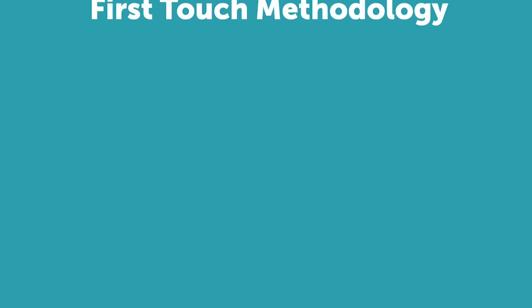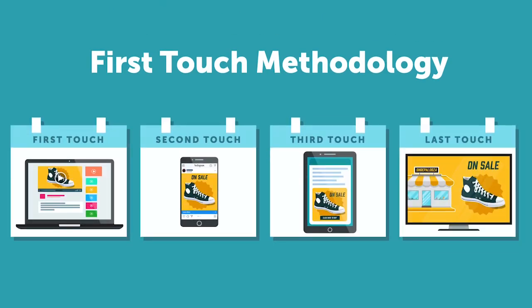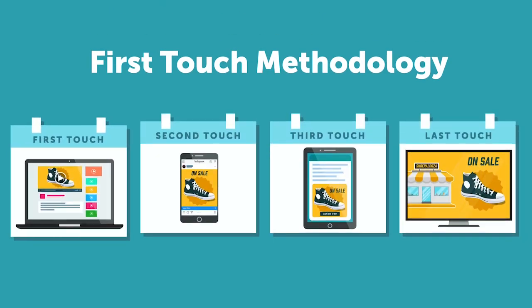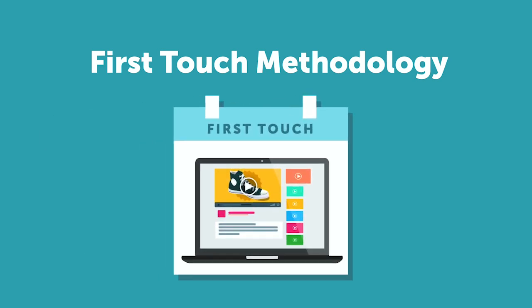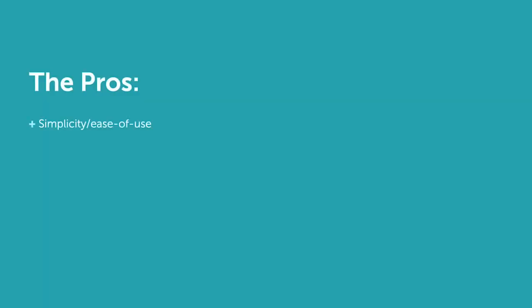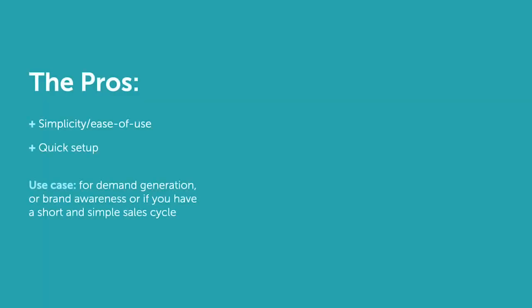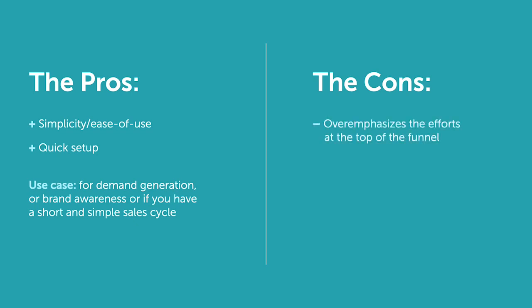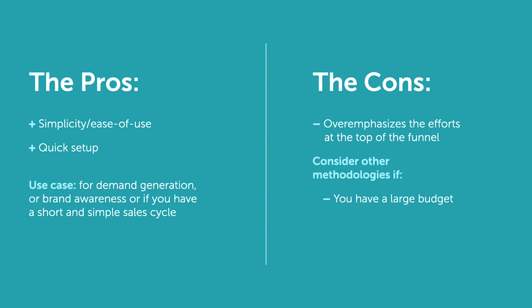Next is the first touch methodology, which is completely the opposite of last touch. With first touch, the first time a customer interacts with your company is determined to be the most important reason they ended up purchasing with you. The pros: it's simple, easy to use, and easy to set up. A great use case would be for demand generation or brand awareness if you have a short and simple sales cycle. The cons: this model overemphasizes the efforts of the top of the funnel. Consider other methodologies if you have a large budget and want to optimize your marketing strategy for longer or more complex sales cycles, or if you attract plenty of prospects but are failing to convert them.